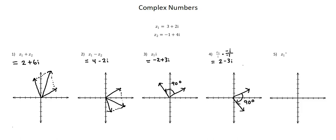Finally, problem five: we want the conjugate of Z1. The asterisk represents the conjugate of a complex number. Z1 is 3 plus 2i, thus the conjugate is 3 minus 2i. Let's go to the Argand diagram to identify the geometrical representation of a complex number and its conjugate. Starting with Z1, 3 plus 2i — plotting that point and putting in the position vector. Then 3 minus 2i — plotting that point and putting in the position vector. We see that the resultant vector is a reflection of the original vector through the x-axis. The geometrical representation of the conjugate of a complex number is a reflection through the x-axis.